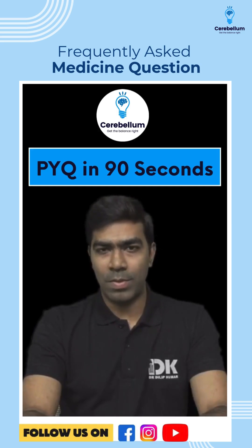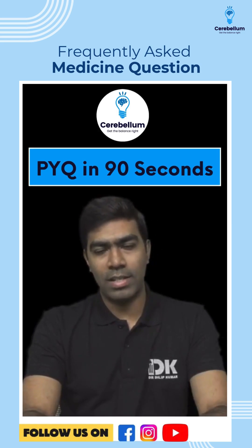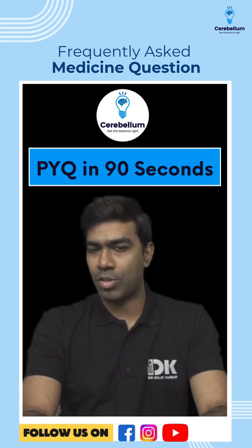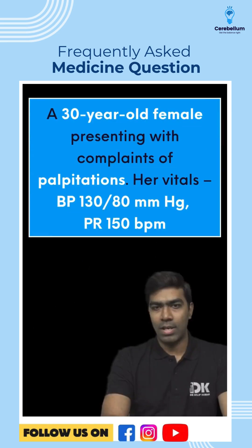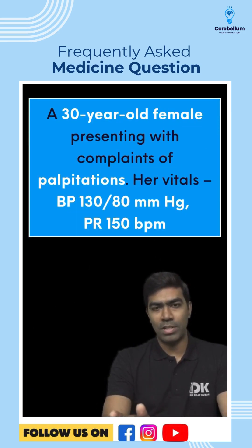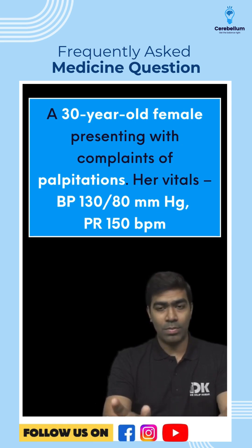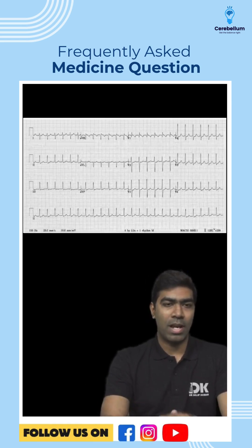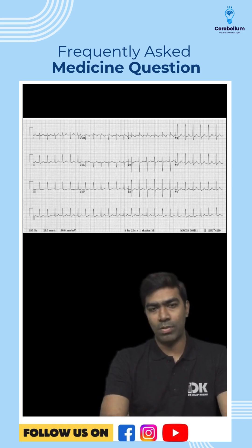Welcome to Cerebralance PYQ 90 Second Series. Today we're going to discuss a very common case that's asked in exams regularly. You have a 30-year-old female presenting with complaints of palpitations to the emergency, and her vitals are apparently stable except for the pulse rate, which is 150 beats per minute, and the ECG is shown below.